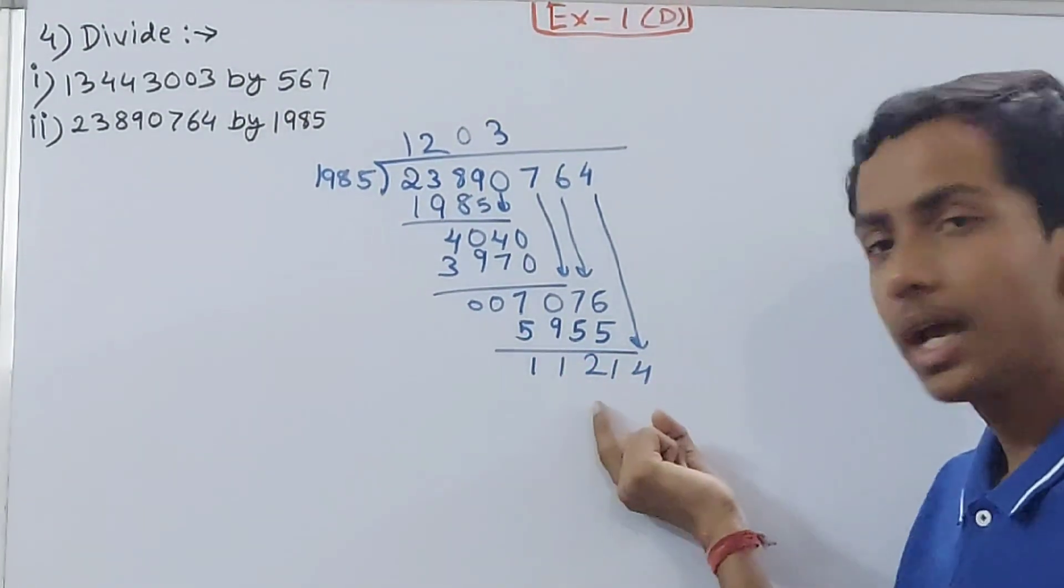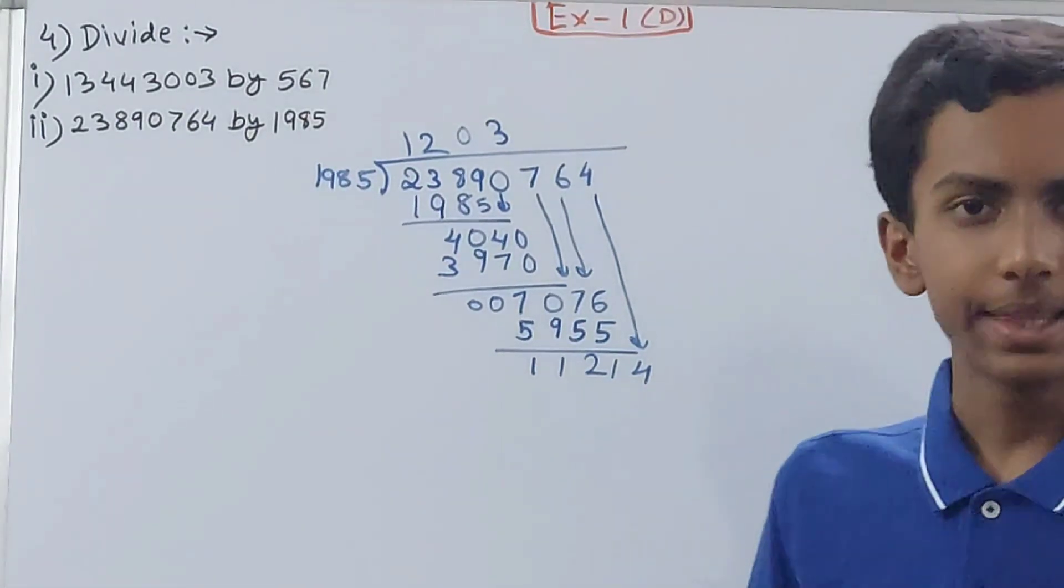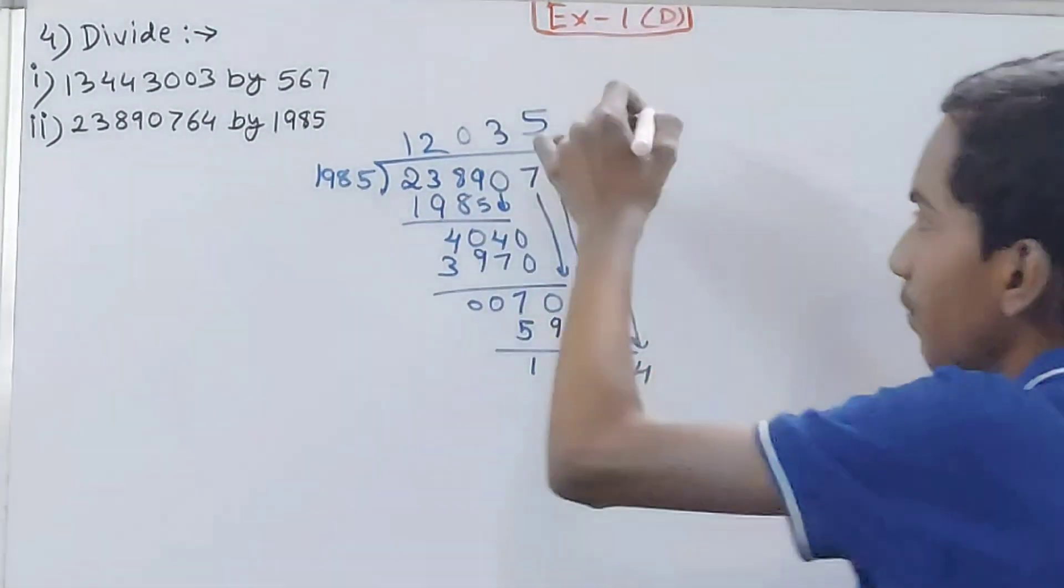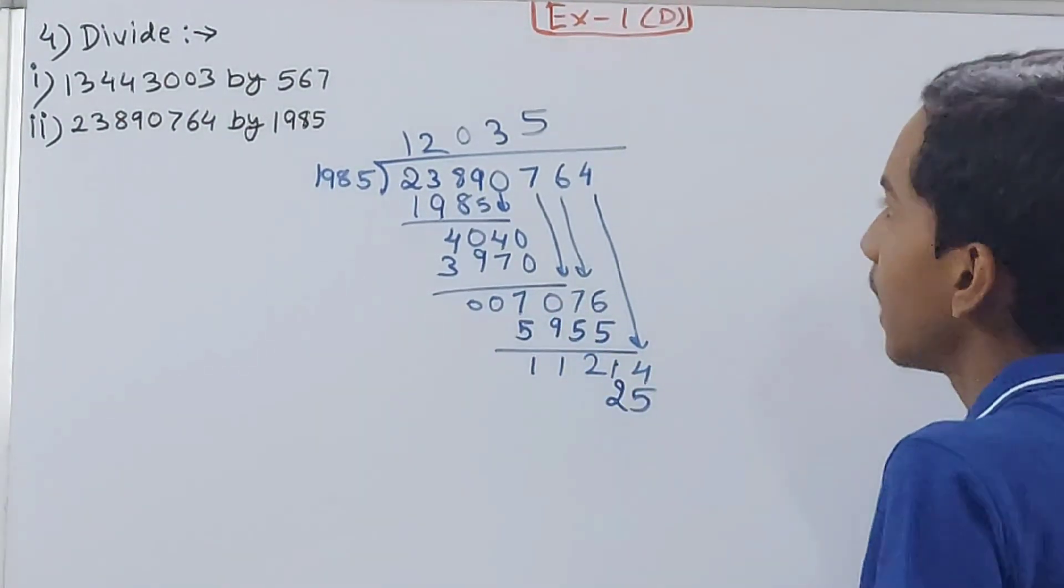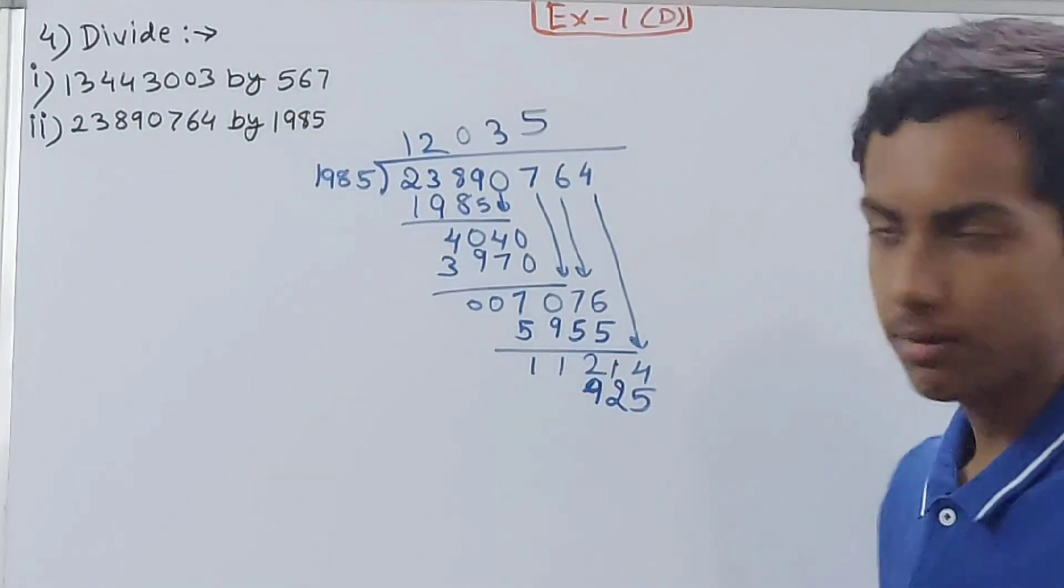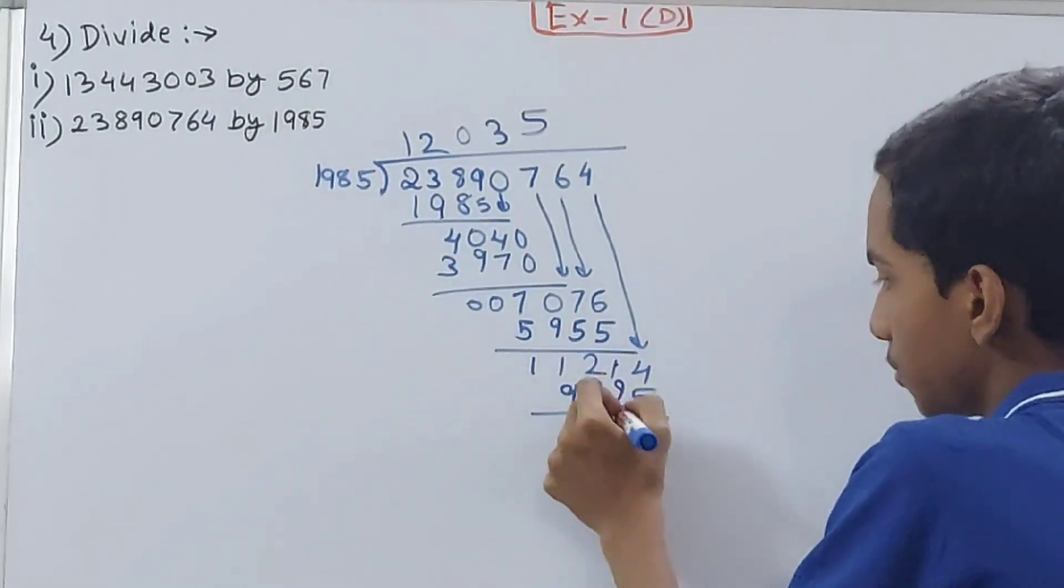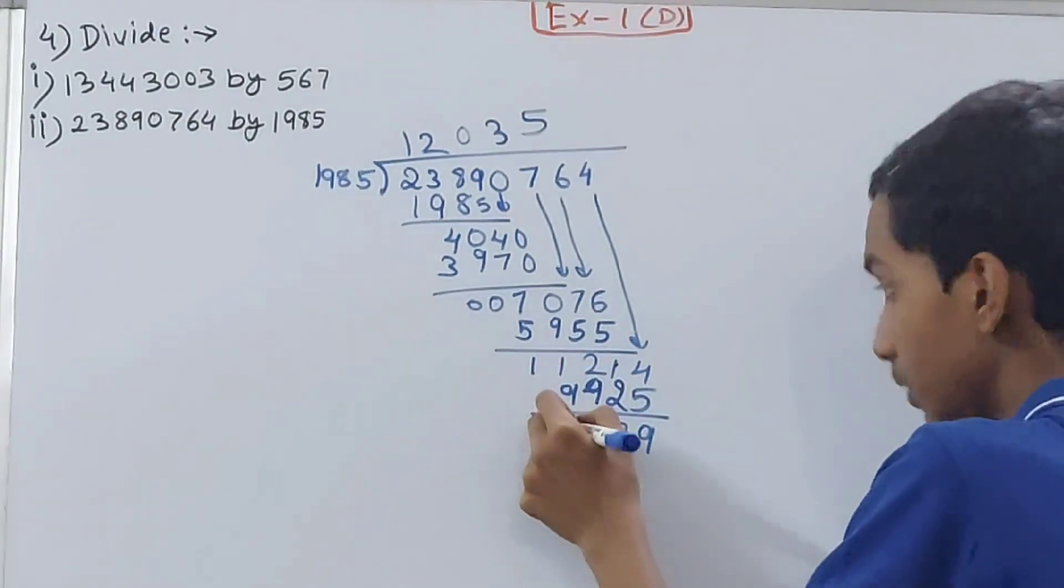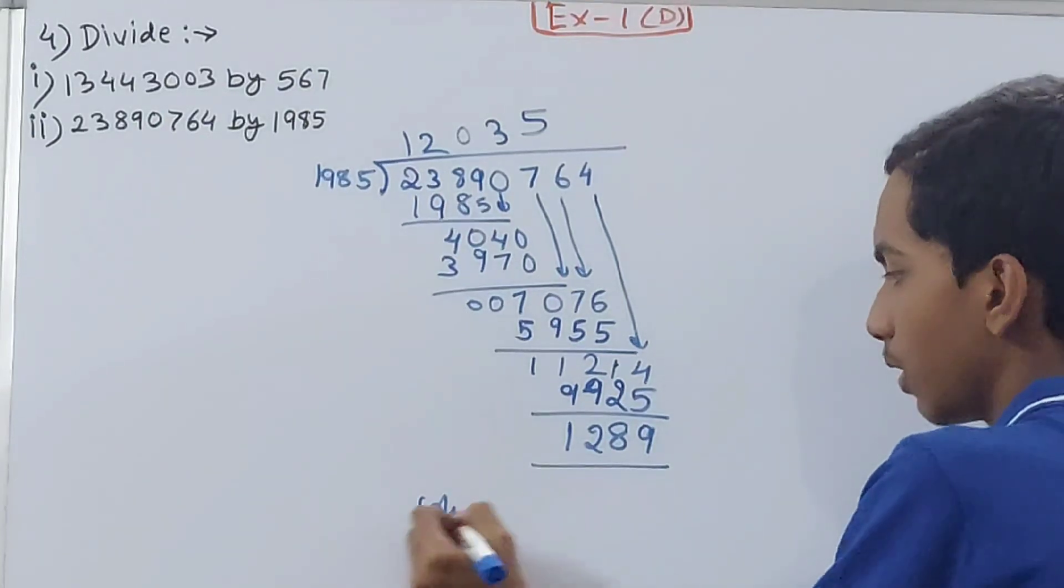5 times 5 is 25 and 2 carried over, 8 times 5 is 40 and 2 is 42, 9 times 5 is 45 and 4 is 49, and 4 there, 5 times 1 is 5 and 1 is 9. Now see, 14 minus 5 is 9, 10 minus 2 is 8, 11 minus 9 is 2, 10 minus 9 is 1. So your quotient is 12,035, your remainder is 1289, and that becomes the answer.